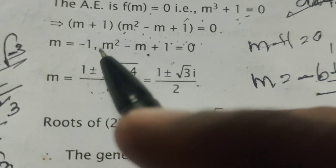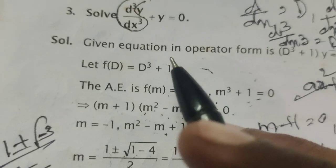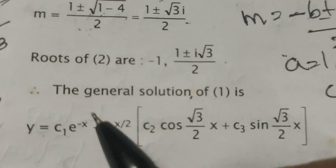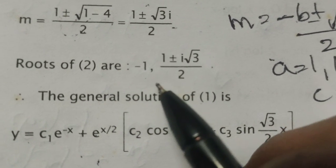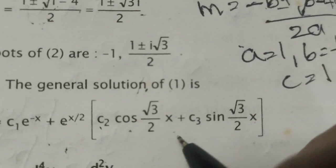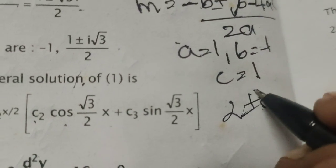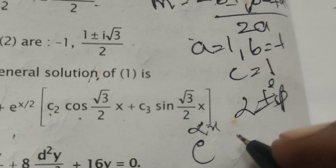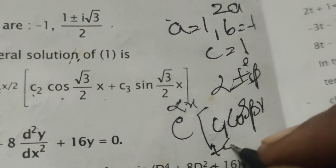So the roots are m = -1 and m = 1/2 ± i√3/2. Using the formula for complex roots α ± iβ, the solution involves e^(αx)(c₁cos(βx) + c₂sin(βx)), where α = 1/2 and β = √3/2.